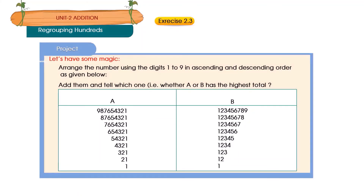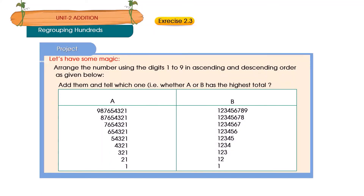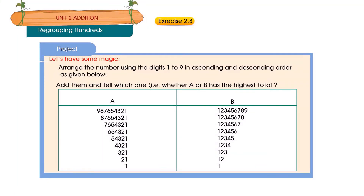Project: Let's have some magic. Arrange the numbers using the digits 1, 2, and 9 in ascending and descending order as given below. Add them and tell which one — whether A or B — has the highest total.